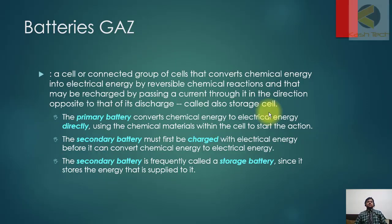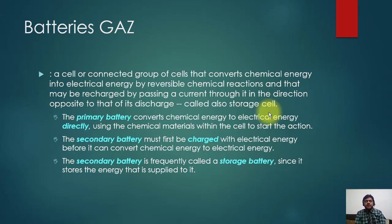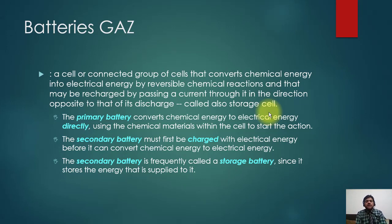Welcome again. We will start our new topic, which is batteries. I will specifically discuss the battery gas batteries as an example. A cell or connected group of cells converts chemical energy into electrical energy by reversible chemical reaction, and may be recharged by passing a current through it in the direction opposite to that of its discharge.